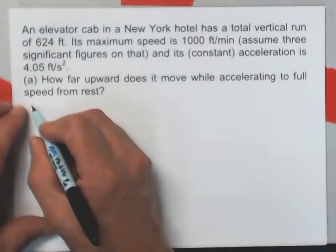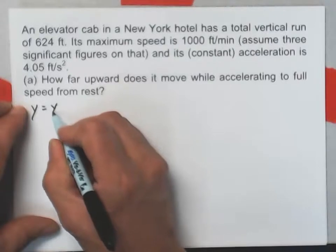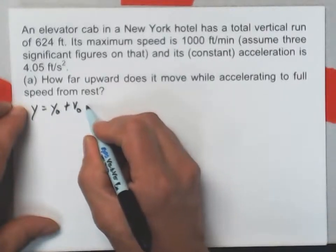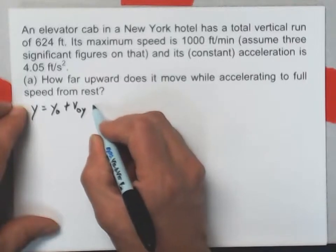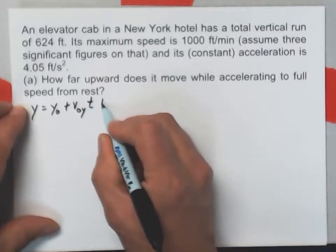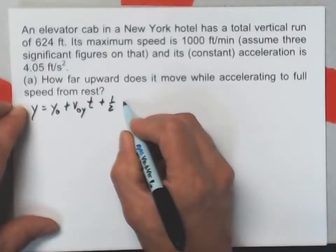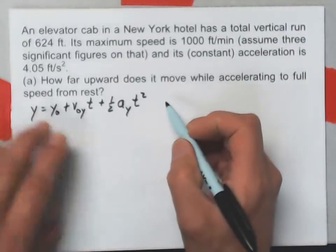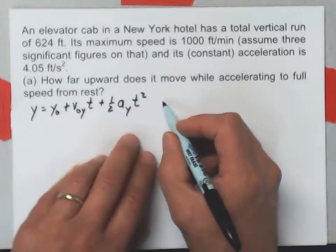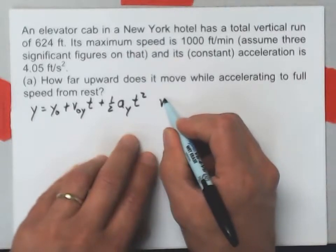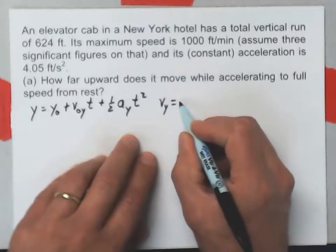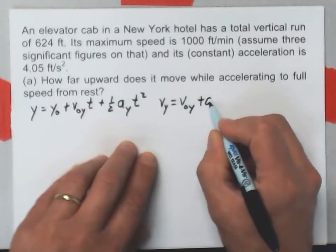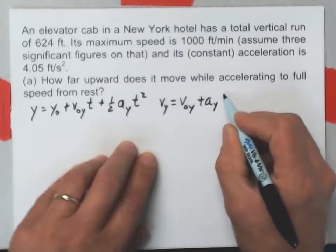So I'll have y equals y naught plus v naught y t plus one half a sub y t squared. There's one equation. Another one would be v sub y equals v naught y plus a sub y t.